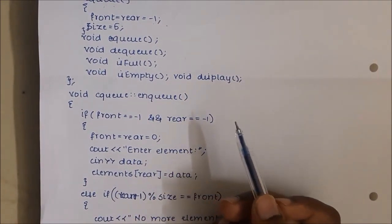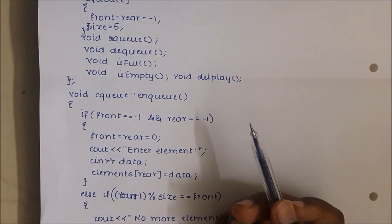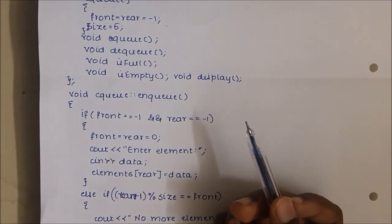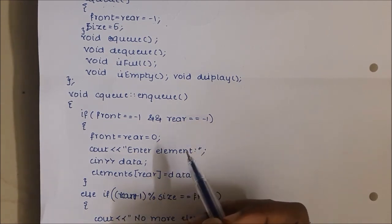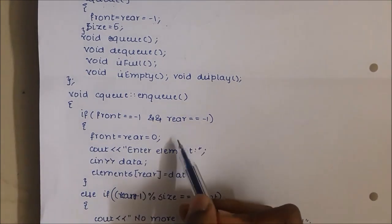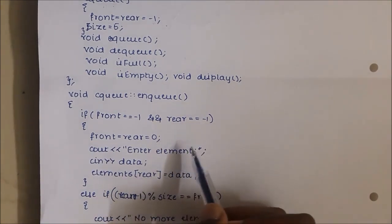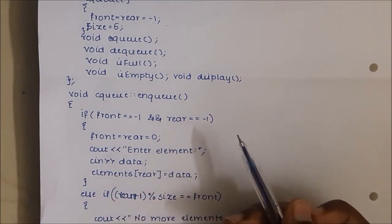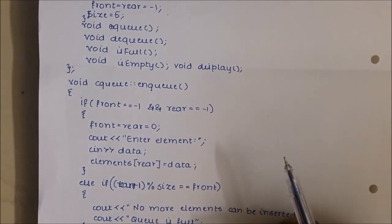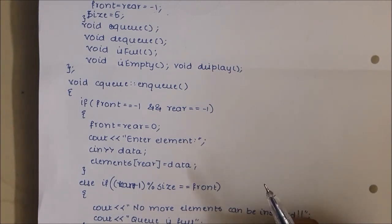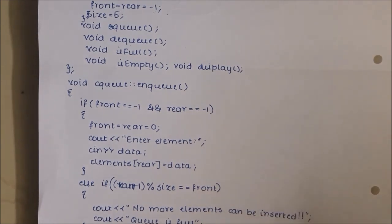Every time we insert an element in a circular queue, we must first check two conditions. One, if the queue is empty, because the element being inserted would be the first element and the code handles it differently. Second, we check if the queue is full. If the queue is full, there is no vacant space to enqueue an element, so we display a message saying the queue is full. Otherwise, a normal enqueueing is performed.